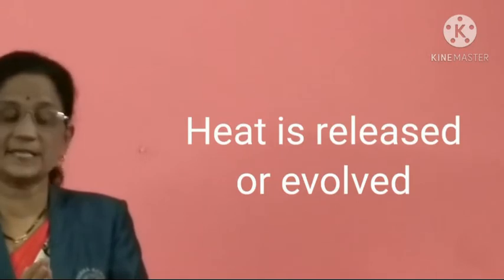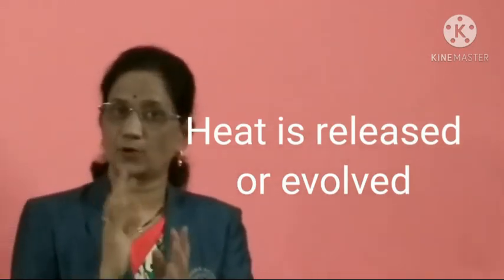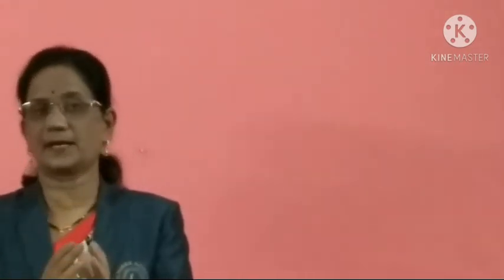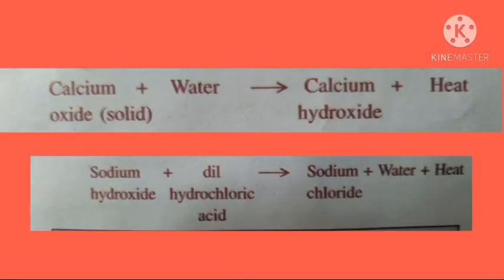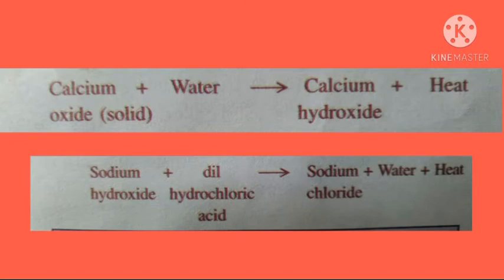The sixth characteristic is that heat is evolved or released. In some chemical reactions, heat may be evolved or released. For example, when water is added to quicklime, a large amount of heat energy is evolved. When dilute hydrochloric acid reacts with sodium hydroxide, some heat is released. In a chemical reaction, transfer of energy takes place during the formation of products from reactants in the form of heat and light.